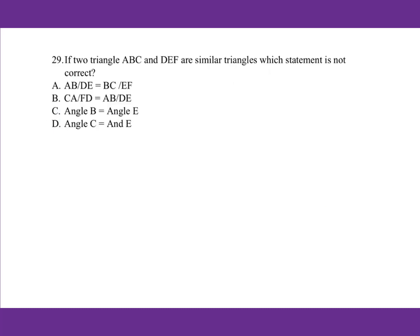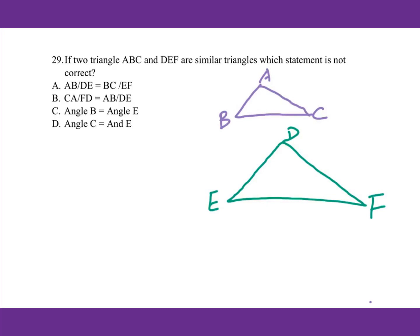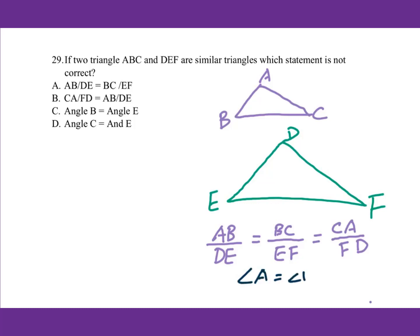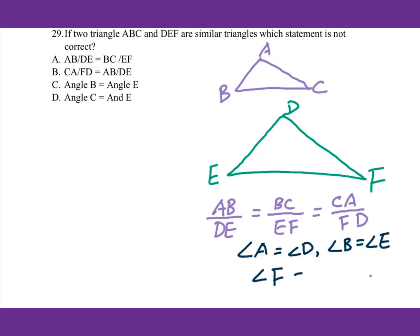For number 29, if triangles ABC and DEF are similar, which statement is not correct? For similar triangles, the ratio of corresponding sides are equal and corresponding angles are equal. We can write: AB over DE equals BC over EF equals CA over FD. And angle A equals angle D, angle B equals angle E, and angle F equals angle C. Therefore, option D is not correct.